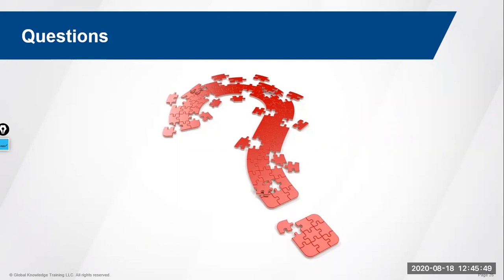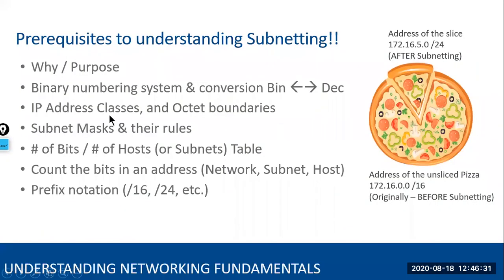How to understand which network or subnet is correct with a network mask? For that, you'd have to understand the IP address classes, the rules of subnet masks, how many subnets you need, and how many hosts you need. Once you have a clear understanding of these things, it becomes very apparent — which network or subnet mask is correct. Going back: once you understand the IP address classes, octet boundaries, subnet mask rules, and how many subnets and hosts you need, it'll become clear.